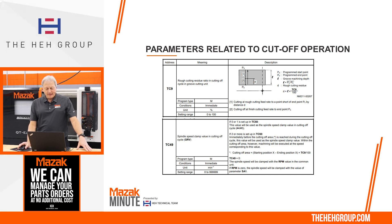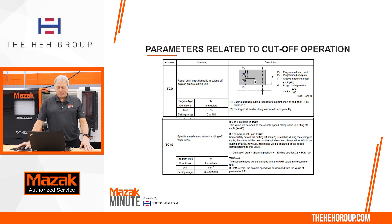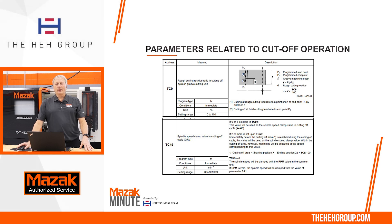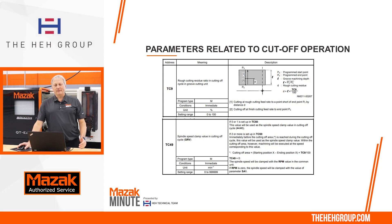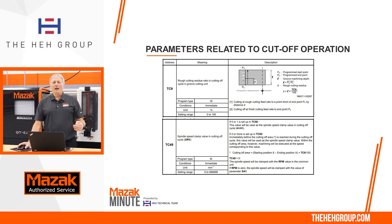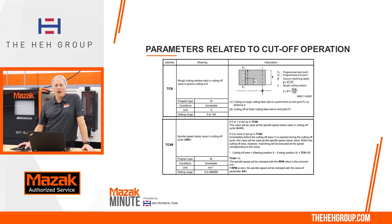If we look down below at TC49, you're going to see that if I have a zero or one set for TC50, TC49 becomes the restricted RPM — the straight RPM value. So from the two inches down to that 0.4, it would be in constant surface feet where it's increasing in RPM. But when I get to the part where I want a constant RPM, I want to have TC49 set to that value — you may have it set to 500 RPM or so. That will allow the part to drop straight into the catcher.